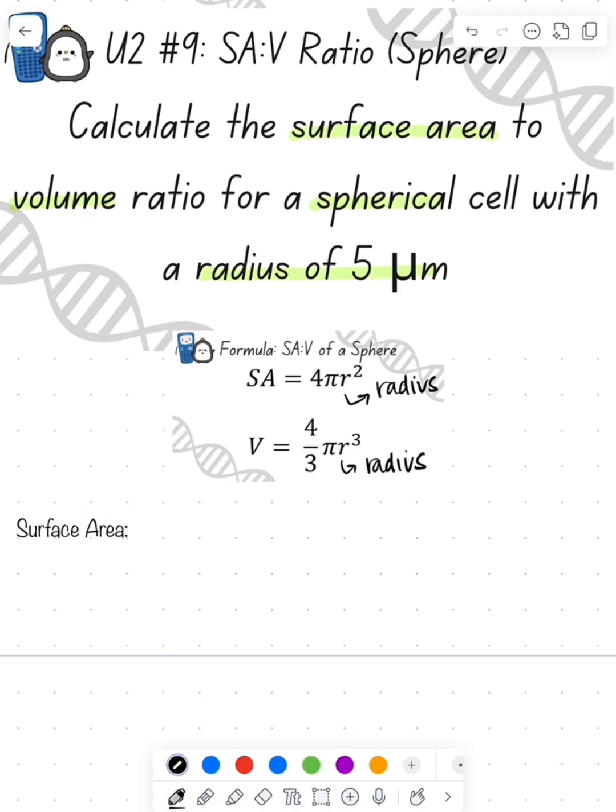So whenever I solve math problems, I always write out the equation. So 4πr², where r is 5, so 5 squared is 25, so 4 times π times 25 is 100π.